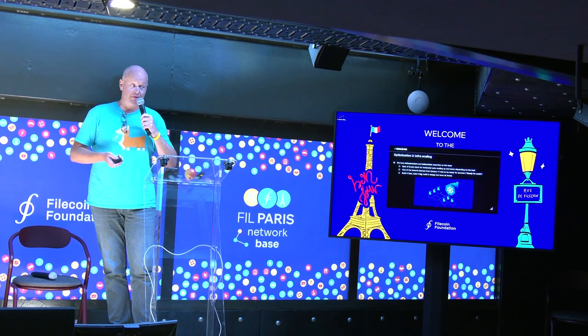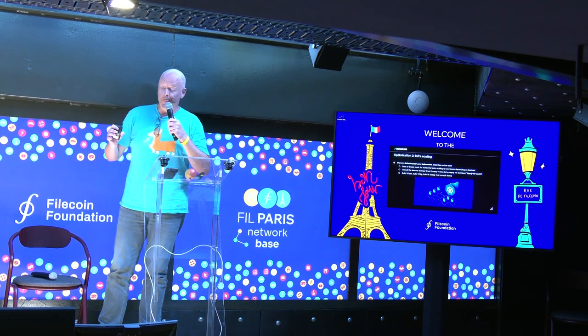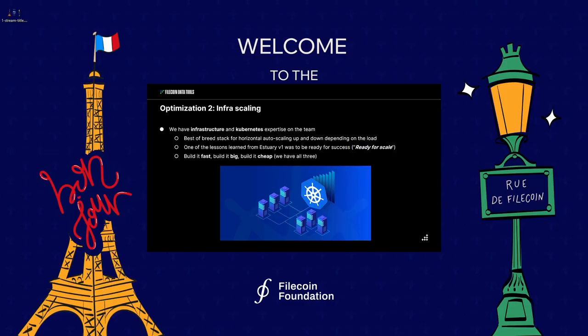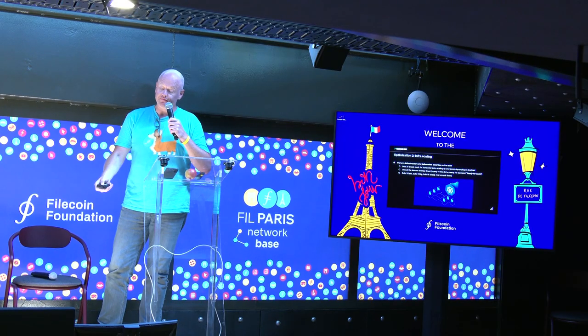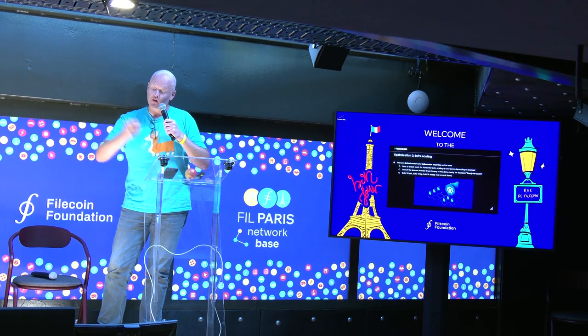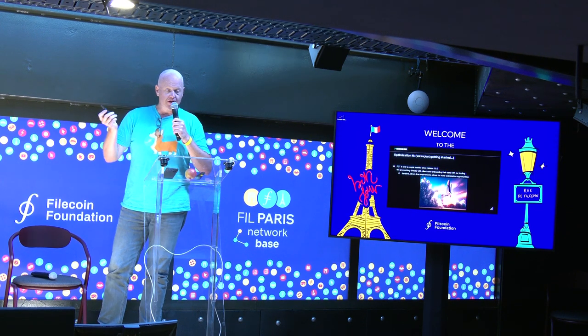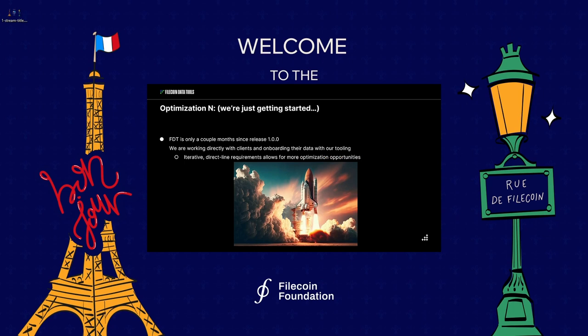The second thing we've done is build our own infrastructure with an opinionated architecture. We're able to onboard data really fast because we can stand up a slice of our own optimized infrastructure and get customers going fast. Version one of our product FTT has only been out for a couple of months.